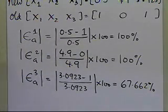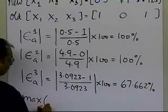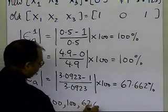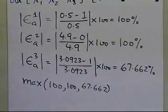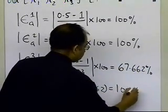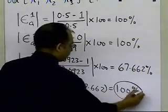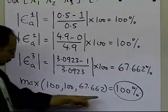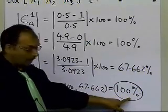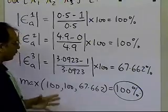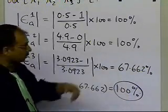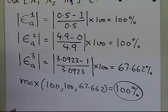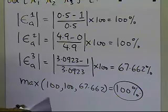We've calculated the absolute relative approximate error for each of the three unknowns. Now we find the maximum of 100%, 100%, and 67.662%, which is 100%. That is the number you compare with the pre-specified tolerance — not each error separately, but the maximum. Since we haven't reached tolerance, we would normally continue iterating, but in this example we're asked for two iterations, so let's conduct iteration number two.